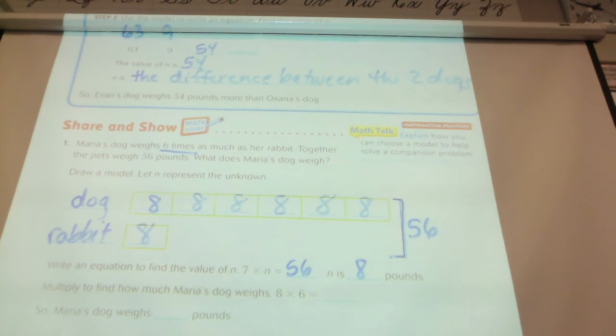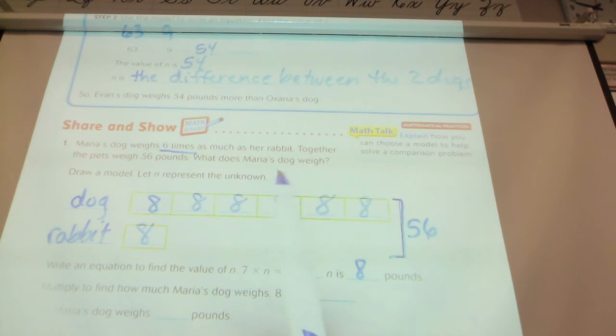If my question is how much does the rabbit weigh, yes, eight is my answer. But I don't know that that's the question. I'm going to go back. What does Maria's dog weigh? So the answer is not eight. I need to go back and figure out the dog. Here's the dog's weight up here.